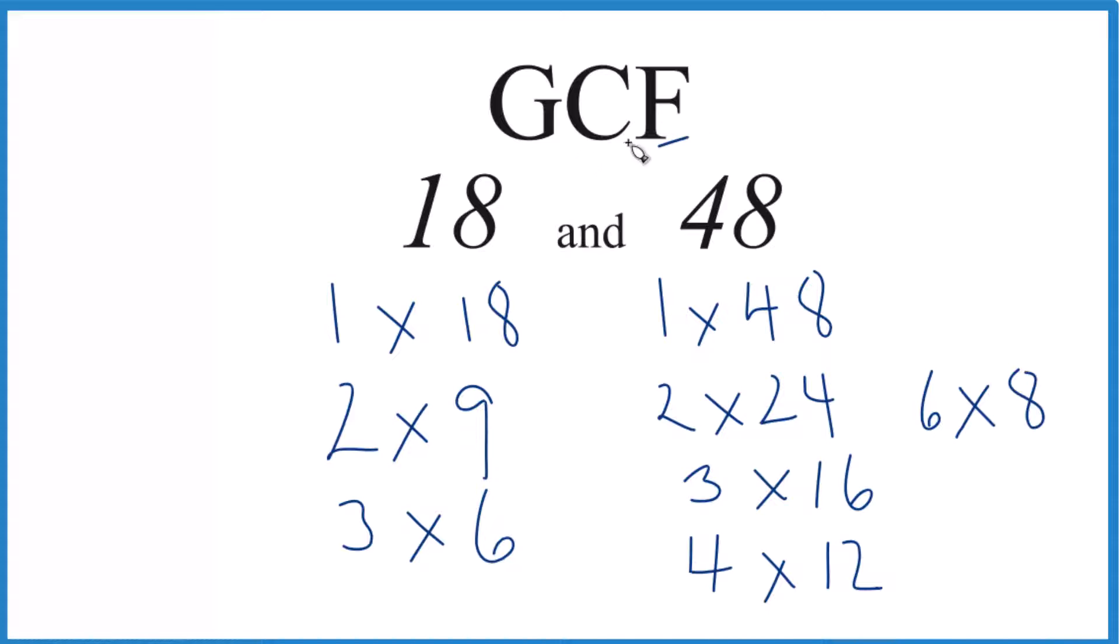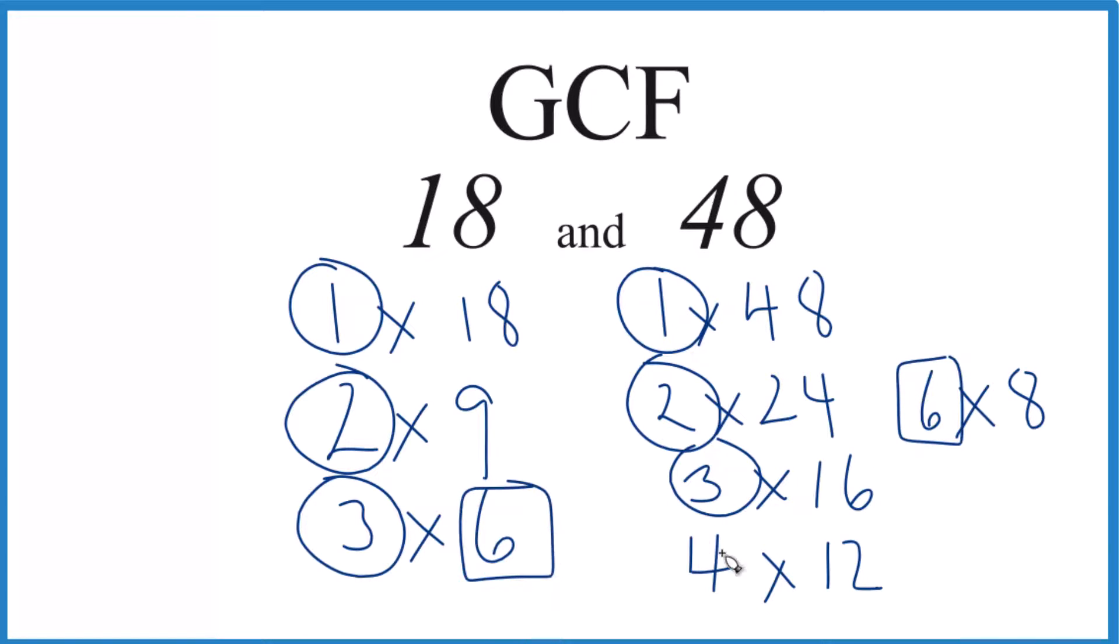So we have our factors, let's see what's in common here. 1 goes into both 18 and 48, 2, 3, yep, no 4. We have 6 right here and right here, and it looks like 6 is the greatest common factor for 18 and 48.